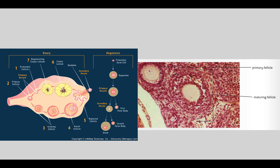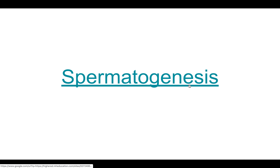Under the microscope you can see a maturing follicle. When it's really big we call it a Graafian follicle. There are other follicles around it. Inside your maturing Graafian follicle you'll find your secondary oocyte.